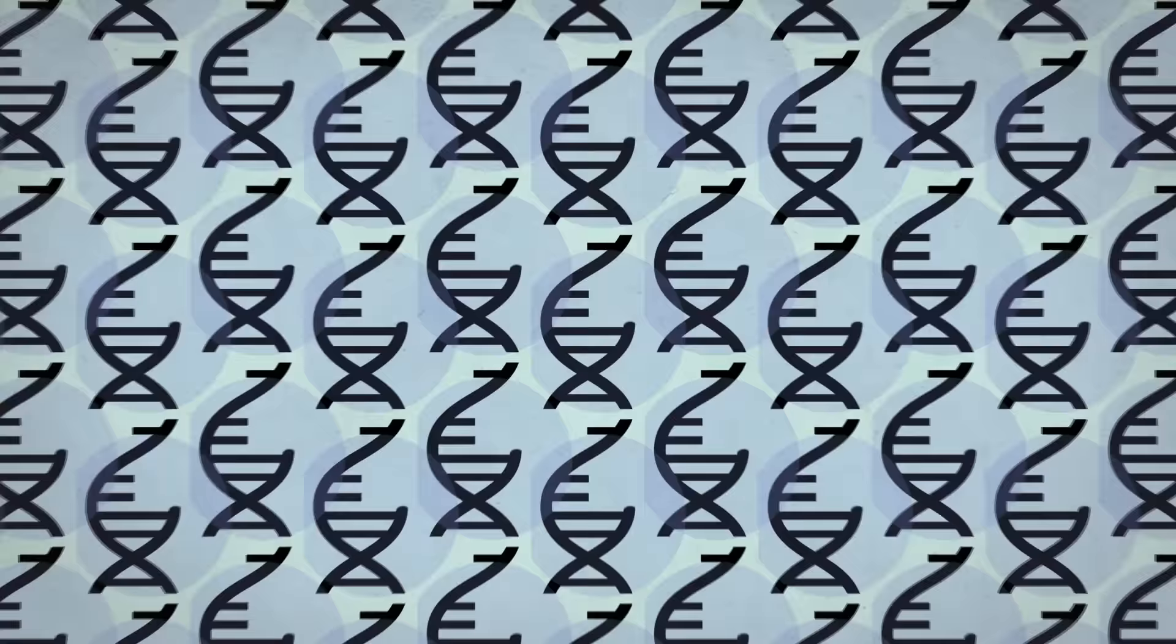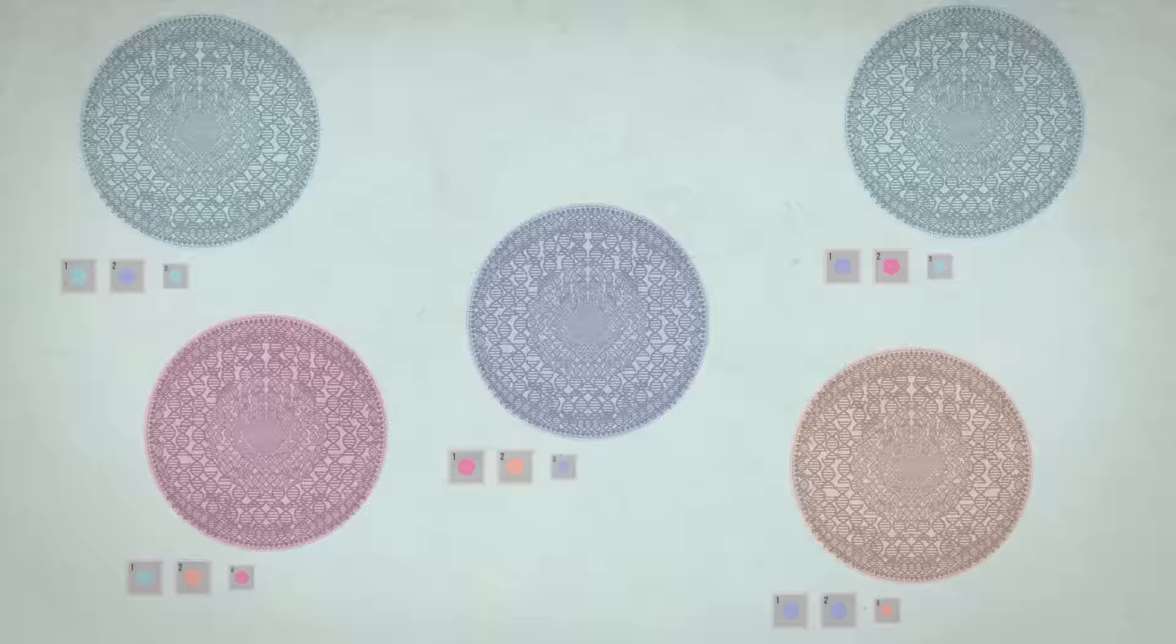At each spot on the genome, one of the special letters binds to its opposite letter. So we now have a double-stranded piece of DNA with a colorful spot at each letter.